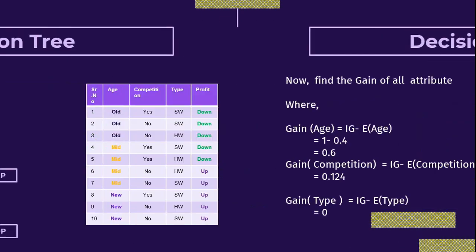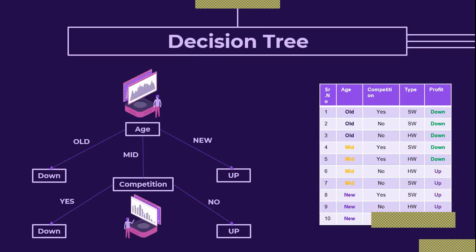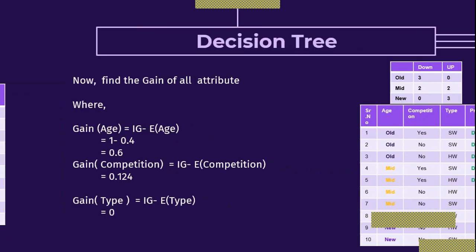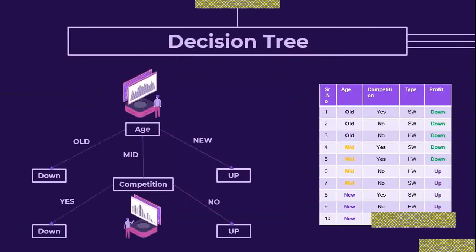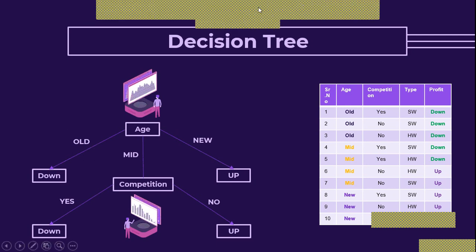Age has the highest gain so it becomes the root. Age has three values — old, mid, and new — which become the branches. For the mid branch, the next highest gain is competition, so competition becomes the next node with yes and no branches. In this way you can draw your decision tree using the numerical method.